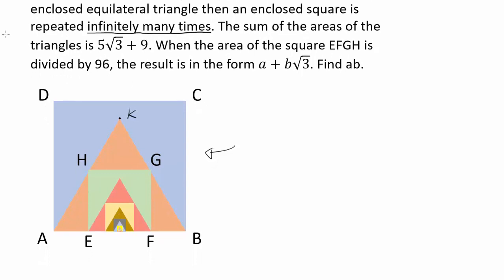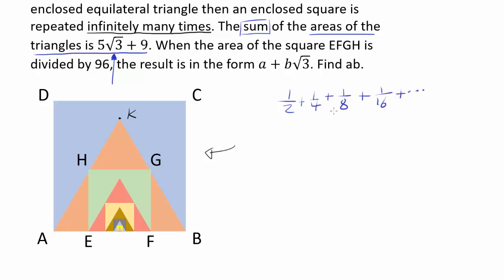What do we have to do? The sum of the areas of the triangles is 5 times square root of 3 plus 9. So the sum of infinitely many areas of infinitely many equilateral triangles sums up to 5√3 + 9. And you may say, how can infinitely many things sum up to one finite number? Well, think about 1/2 + 1/4 + 1/8 + 1/16 — this geometric series that goes on infinitely.